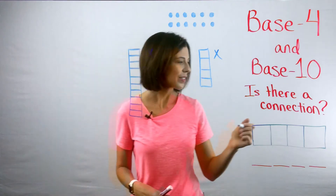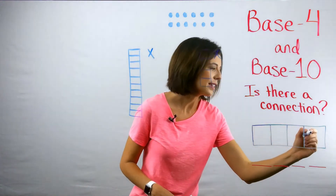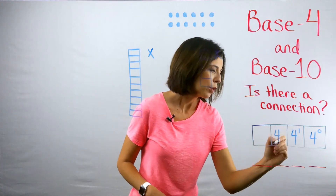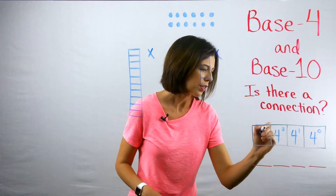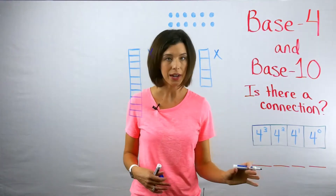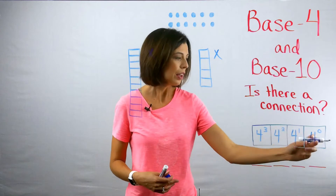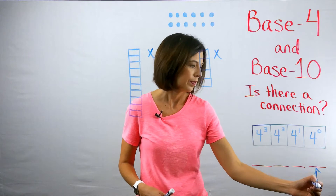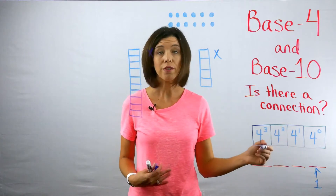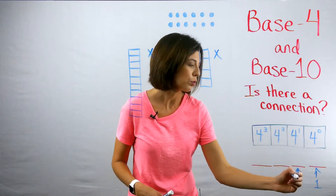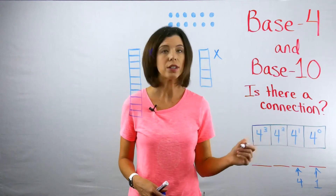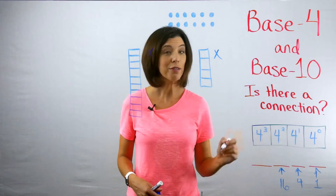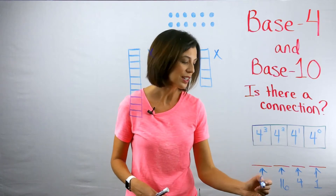Here's where it gets a little crazy. In base four, I still have four to the zero power, four to the first power, four to the second power, and four to the third power. So my digits represent: four to the zero power is one; four to the first power is four, meaning groups of fours; four squared is groups of 16; and four cubed represents groups of 64.